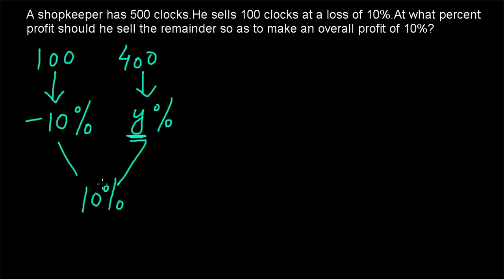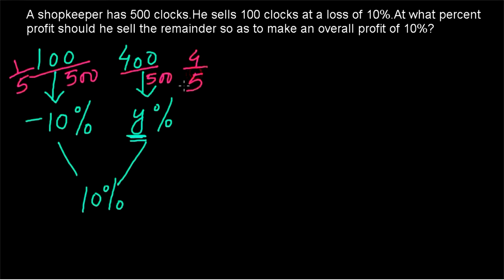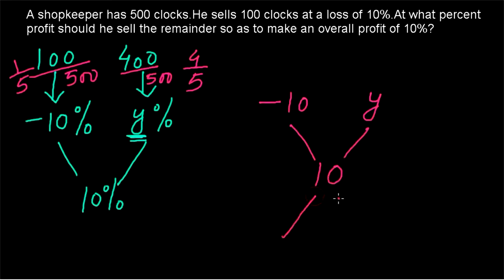Whenever a combination is taking place and the ratio is given, we apply the rule of allegation. You could also solve this using regular profit and loss rules, but it takes a lot more time. Here, the proportion is 100 out of 500, which is 1/5, and 400 out of 500, which is 4/5. So the ratio is 1 is to 4. When minus 10% and Y% are combined, we get an overall profit of 10%.